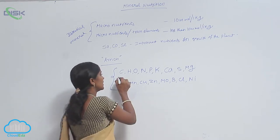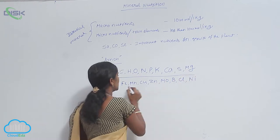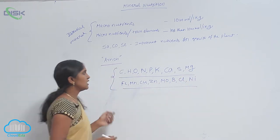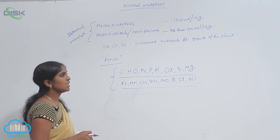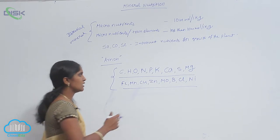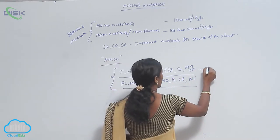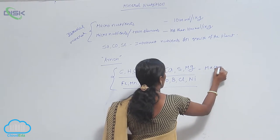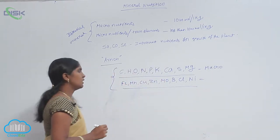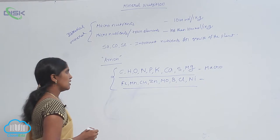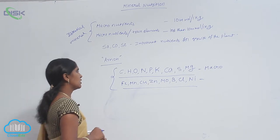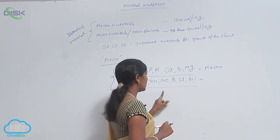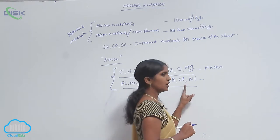Here you are seeing the macronutrients and micronutrients. C-H-O-N-P-K-Ca-S-Mg belong to macronutrients, and Fe (iron), Mn (manganese), Cu (copper), Zn (zinc), Mo (molybdenum), B (boron), Cl (chlorine), and Ni (nickel) are micronutrients.